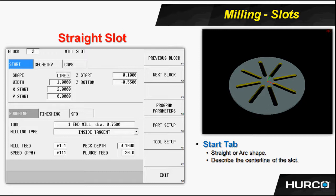It wants to know after the shape, what's the width of the part — it's 1 inch. What is the starting point in X and Y? The feature lies on the Y axis center line, but it's 2 inches over in X. We put our Z start and our Z bottom, which is the final depth of our finished feature. We enter in the tooling information as it asks as well.